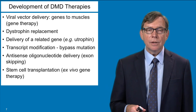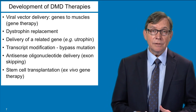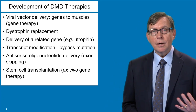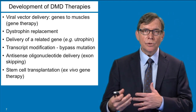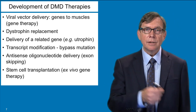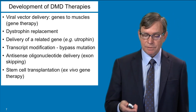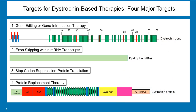Another approach involves stem cell transplantation. There's a lot being developed these days about muscle stem cells and what it takes to grow new muscle. If you could harness stem cell technology to bring in a muscle stem cell that had a fixed or a normal dystrophin gene, you might be able to fix the disorder that way. We're going to focus largely on methods to restore production of dystrophin through genetic therapies based on genes in a variety of ways.